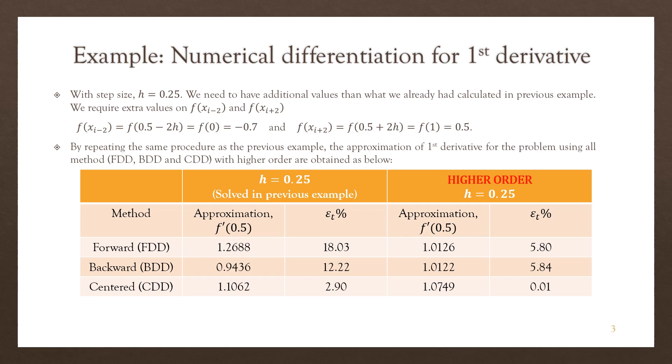For CDD, we have understood that it has already produced a small error, even though we use the lower order formulation. So we can expect that by using the higher order CDD formulation, the true error will be very small, which you can see from there it is 0.01%. So this approximation is almost the same as the exact value.